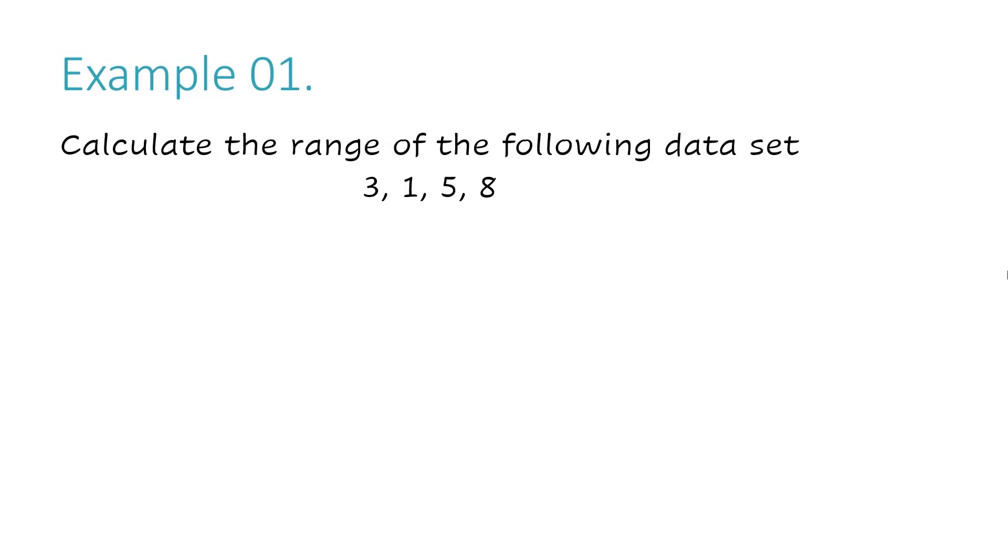Let's take a look at example number one. Calculate the range of the following data set. I'm going to follow my steps that I explained to you before. The first step is to identify the largest number in the data set, and in this case, it's going to be eight. And the second step is to identify the smallest number in your data set, and in this case, it's going to be one. And the final step is to subtract the two. So I have eight minus one, and that gives me seven. So the range of this data set is seven.